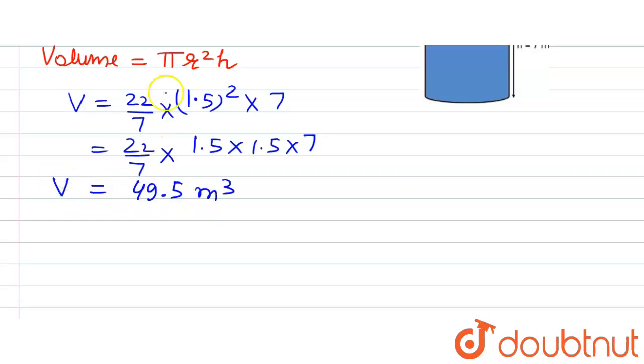But in the question, we were asked to find the volume in liters, but here it is in meters. To convert it to liters, we know that 1 m³ equals 1000 liters.